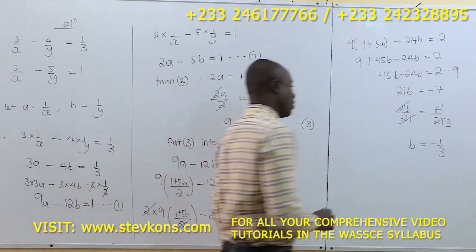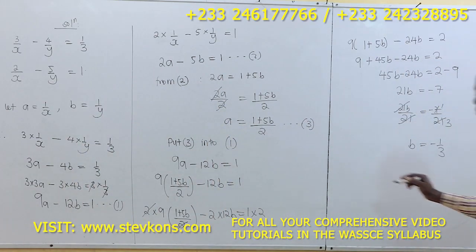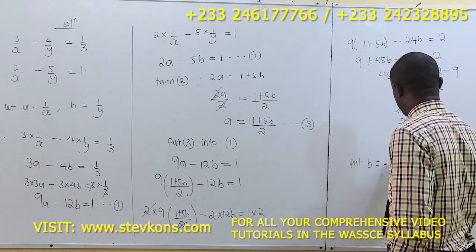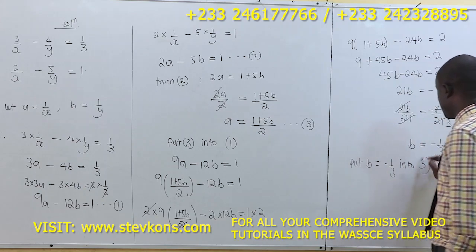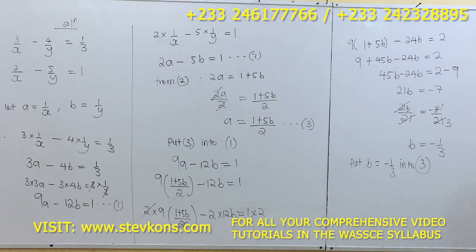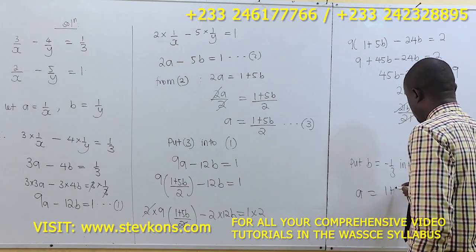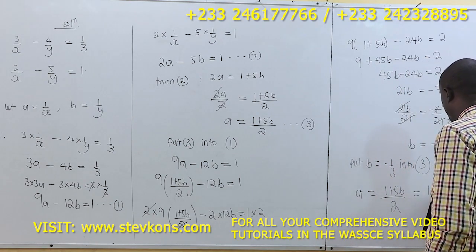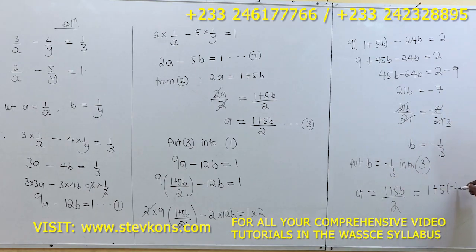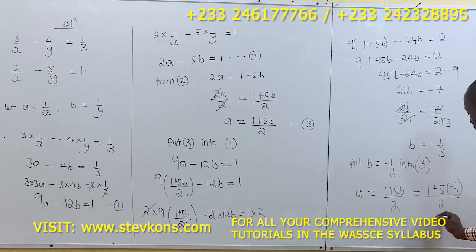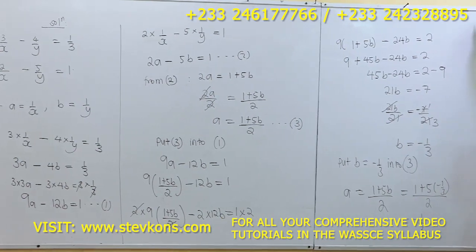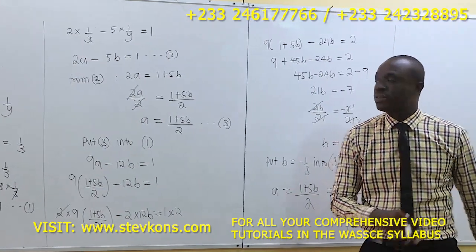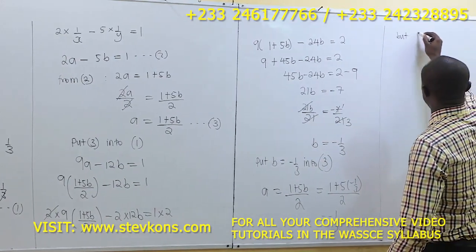So 21b equals negative 7. Dividing both sides by 21: b equals negative 7/21, which simplifies to negative 1/3. Now to find a, substitute b equals negative 1/3 into equation three: a equals (1 plus 5 times negative 1/3) over 2. Working this out on a calculator gives a equals negative 1/3 as well.